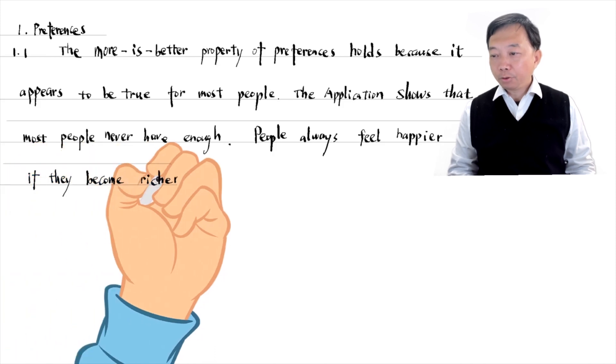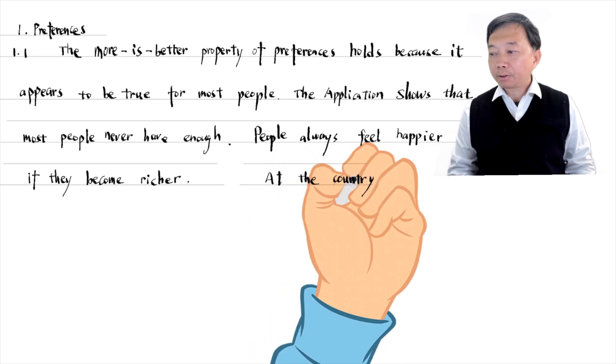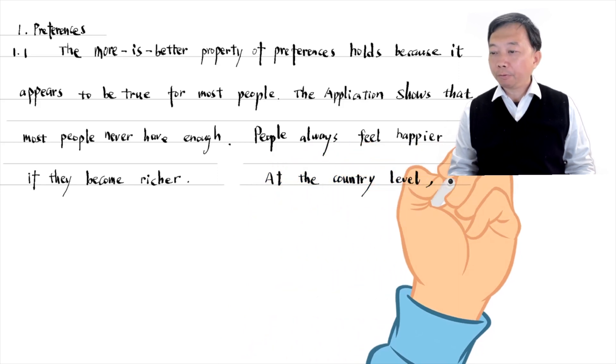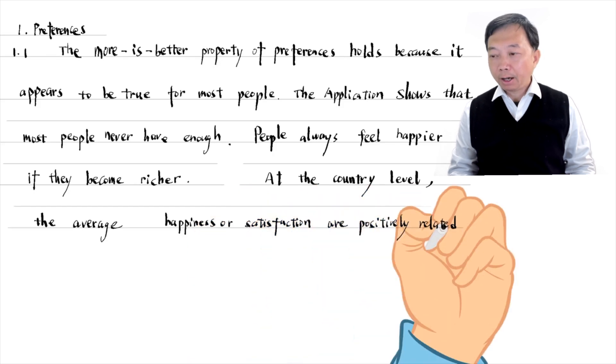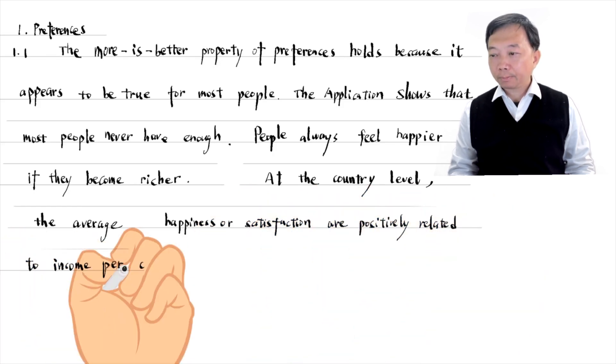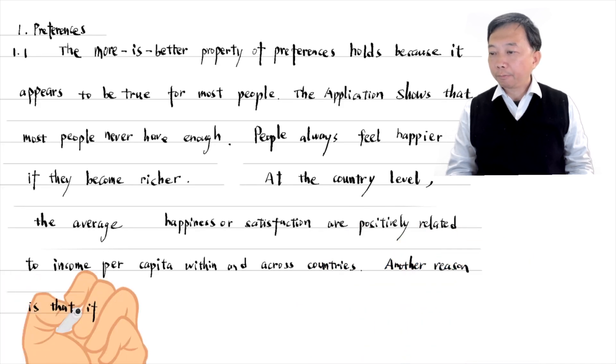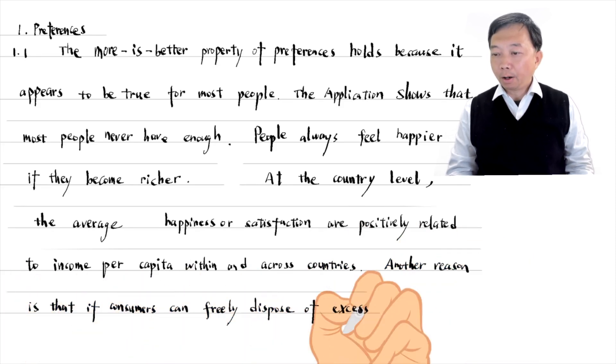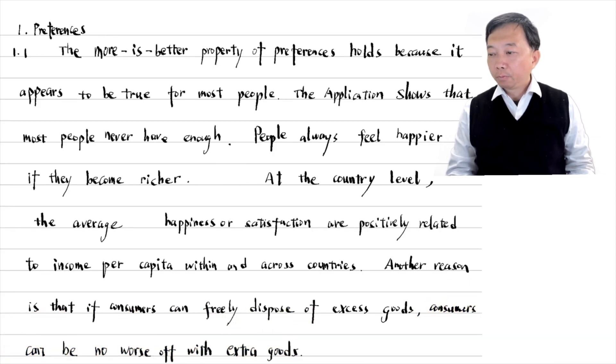At the country level, the average happiness or satisfaction is positively related to income per capita within and across countries. Another reason is that if consumers can freely dispose of excess goods, consumers can be no worse off or quickly better off with extra goods.